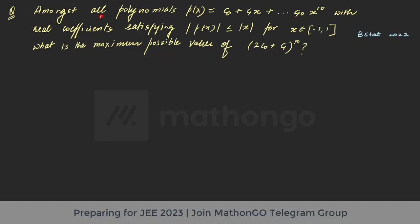So amongst all the polynomials f(x), which looks like a polynomial of degree 10, x to the power 10 with real coefficients satisfying |f(x)| ≤ |x| for all x belonging to [-1, 1]. What is the maximum possible value of this particular quantity? That is c0 and c1 are in picture. So we need to identify how we can get c0 and the value of c1 from this particular question.